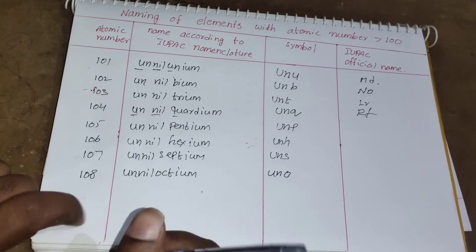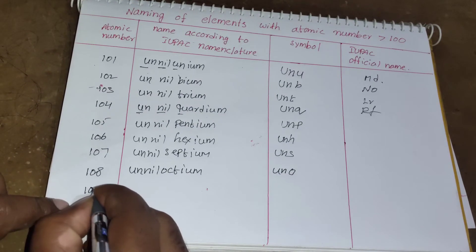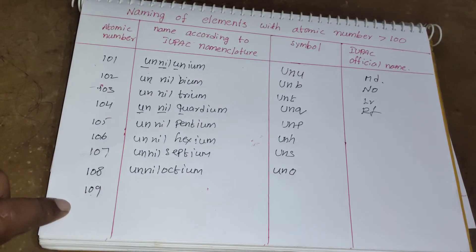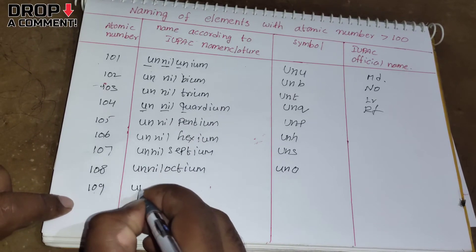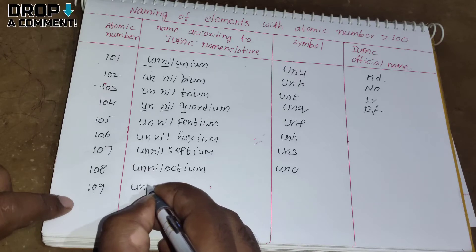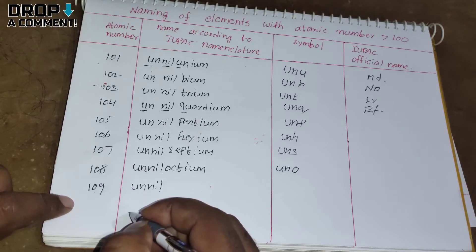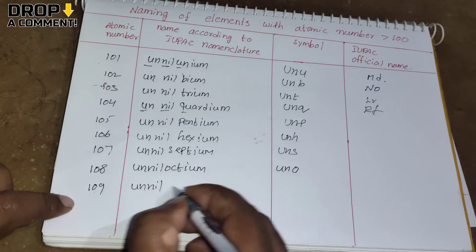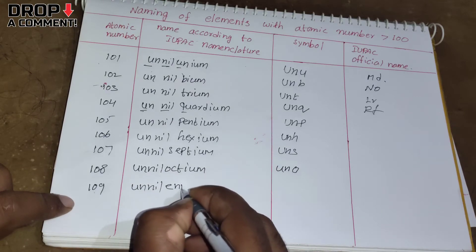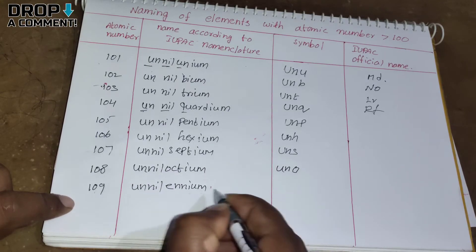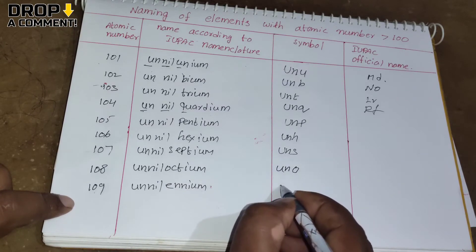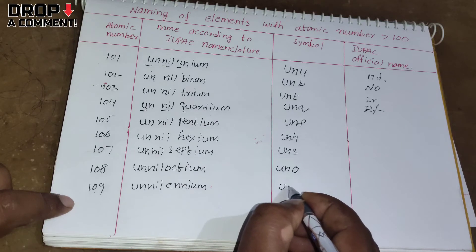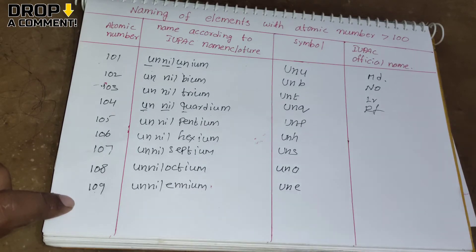For element 109: 1 = un, 0 = nil, 9 = enn, plus '-ium' gives Unnilennium. The symbol is Une.